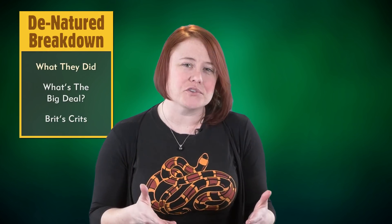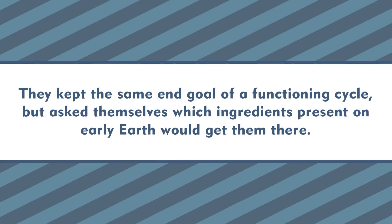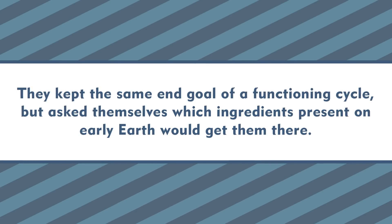In this new study, the researchers went in the opposite direction. Instead of trying to replicate modern biochemistry using the citric acid cycle, they instead used a bottom-up approach and started with several very simple abiotic, or non-living, molecules. In other words, they kept the same end goal of a functioning cycle, but asked themselves which ingredients present on early Earth would get them there. And now the exciting part — what did they find?